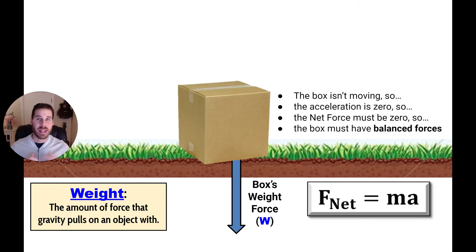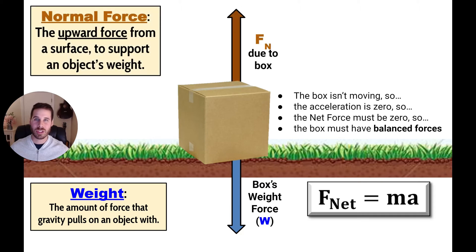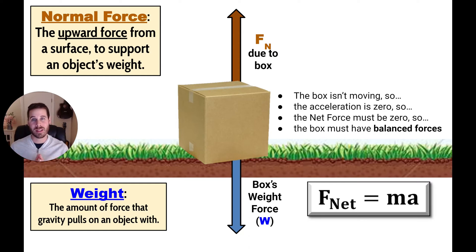In other words, that weight force is being counteracted by some other type of force that's preventing the box from falling down to the center of the planet — it's supporting its weight. This is called the normal force. The normal force is an upward force from a surface to support an object's weight, and it's typically represented with an F and a subscript capital N. That brown arrow represents the normal force the ground puts onto the box to counteract gravity pulling downward.